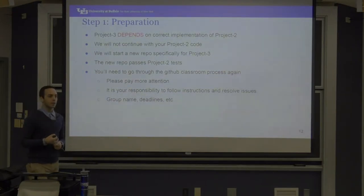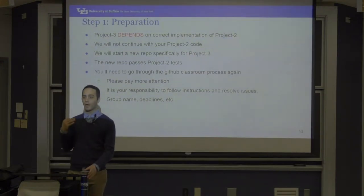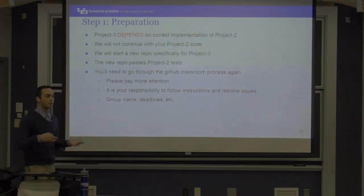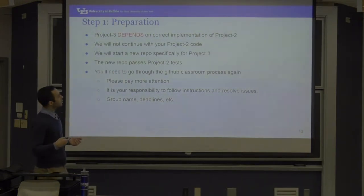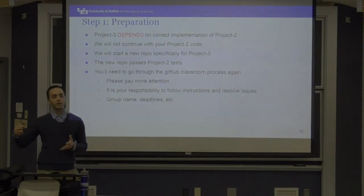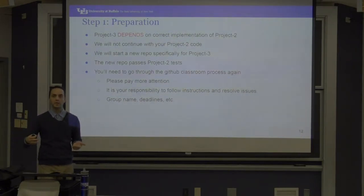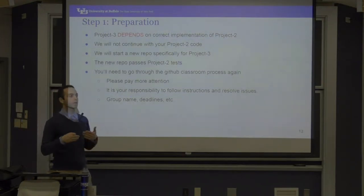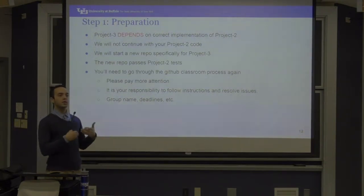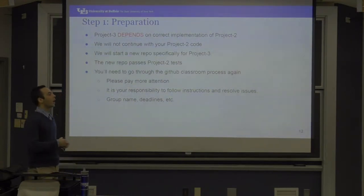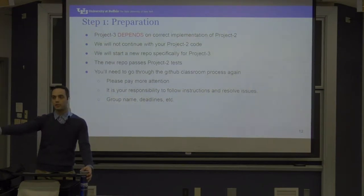Project 3 depends on a correct implementation of Project 2 because it needs the system calls — the tests are in user space. Most of you are not done with Project 2, and even if you are, your code might still have bugs. So what we're going to do is start from a repo that has a complete implementation of PA2 — that will be given to all of you. Your base repo this time is not the fresh base repo. You cannot start working on PA3 from a fresh virtual machine; you have to clone your repo.